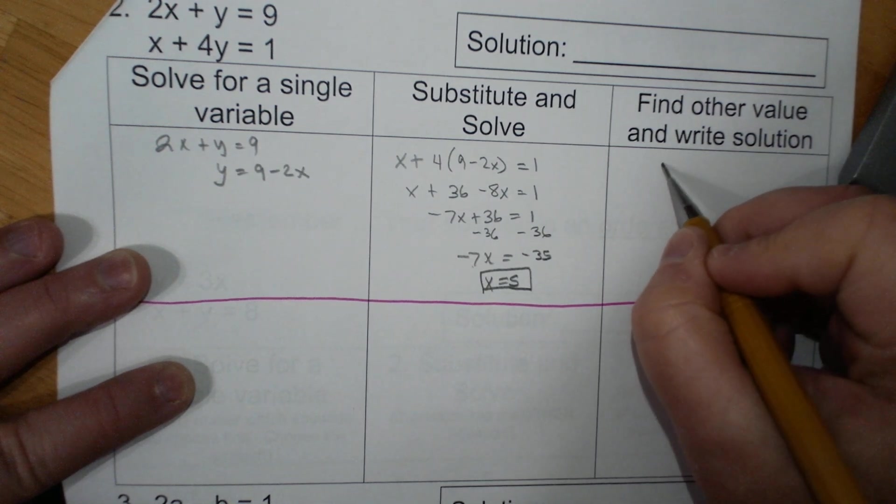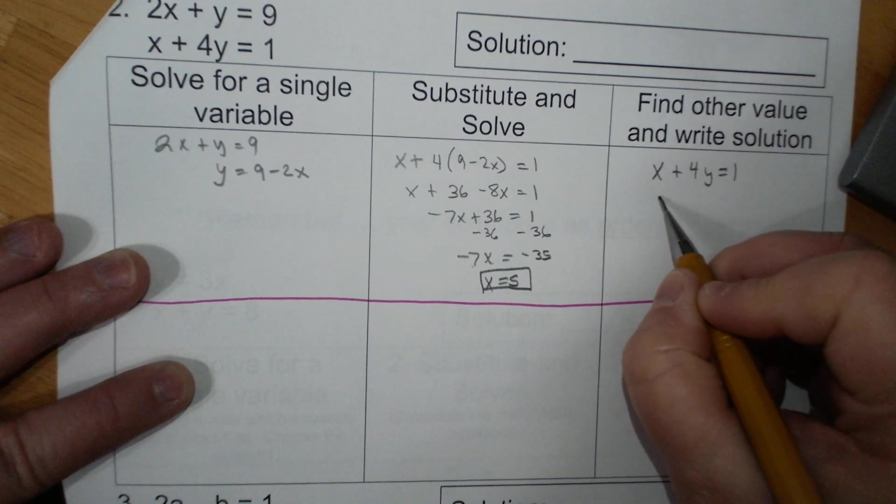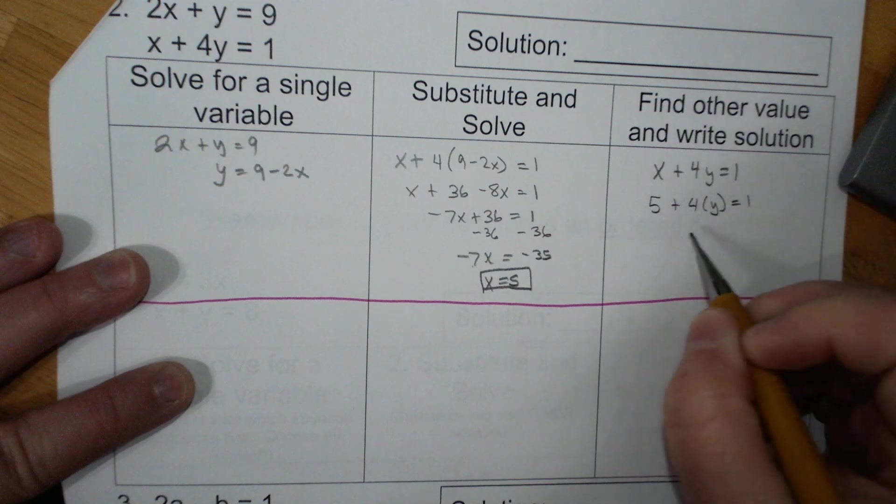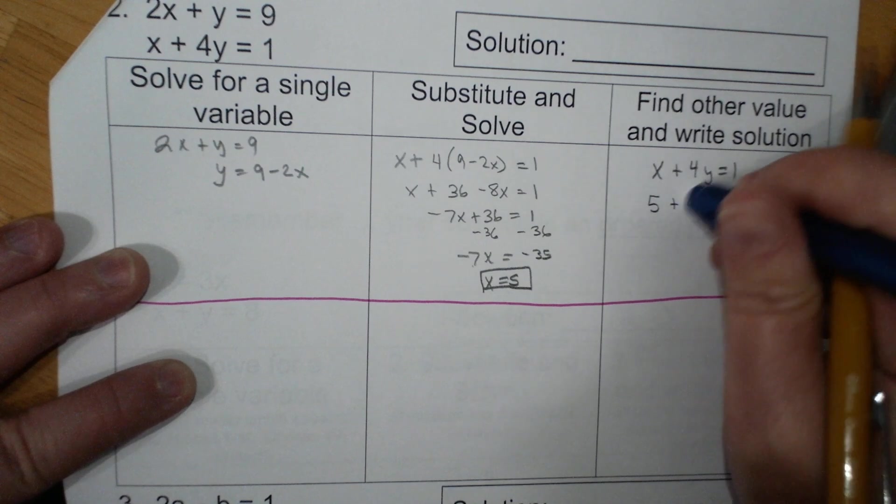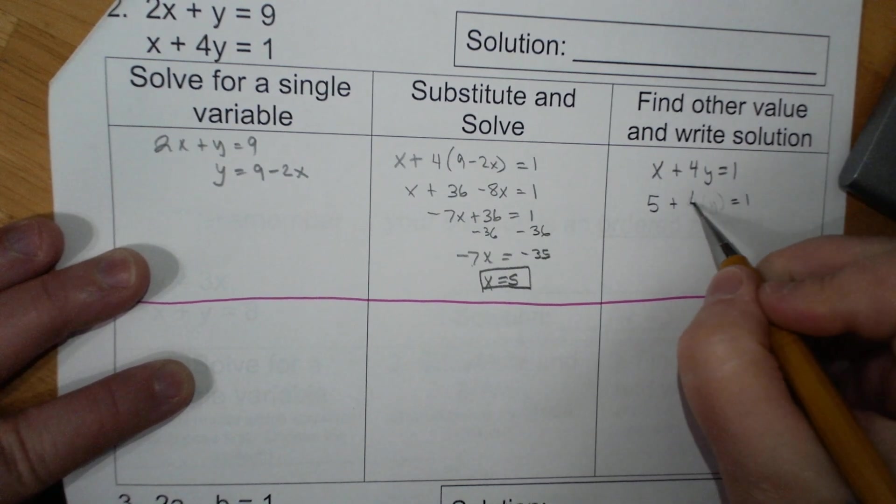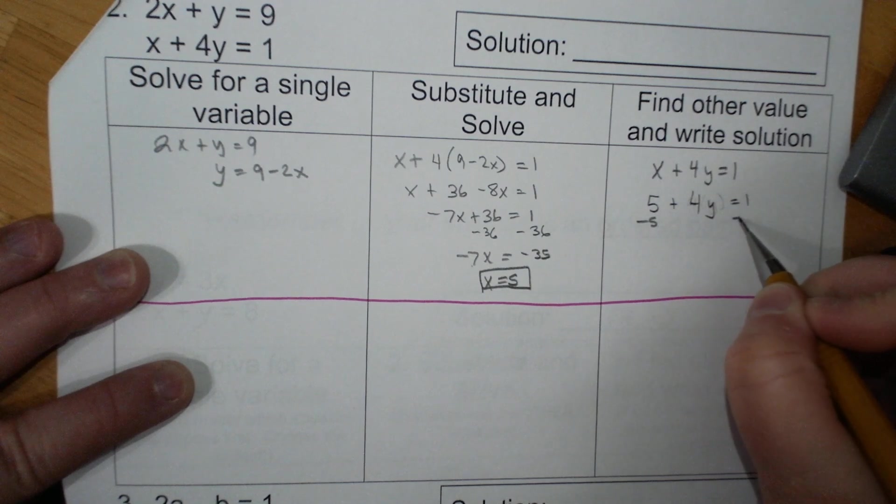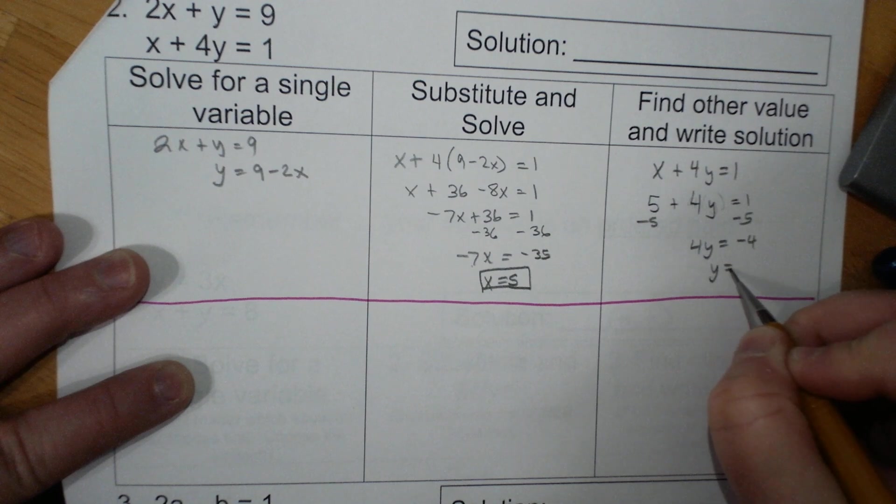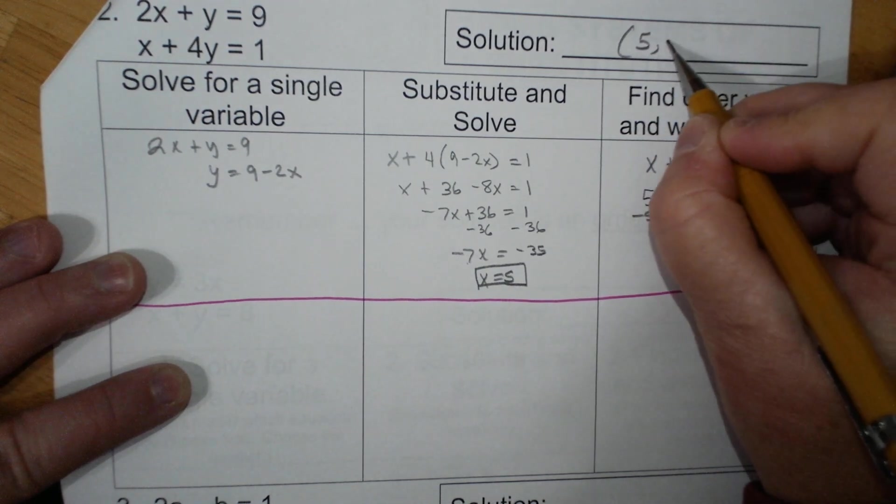I'm going to do x plus 4y equals 1. 5 plus 4 times y equals 1. Don't need the parentheses there. Subtract 5. Subtract 5. 4y equals negative 4. y equals negative 1. My solution is 5, negative 1.